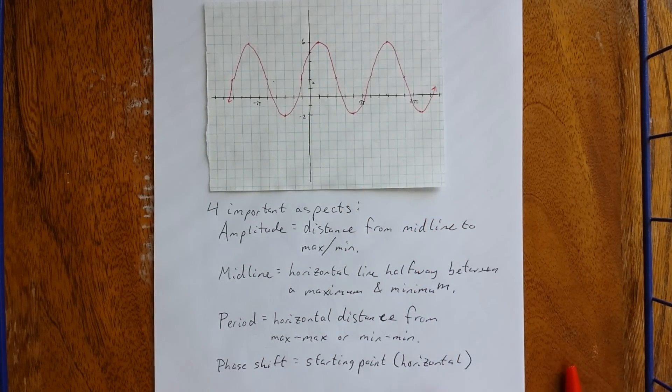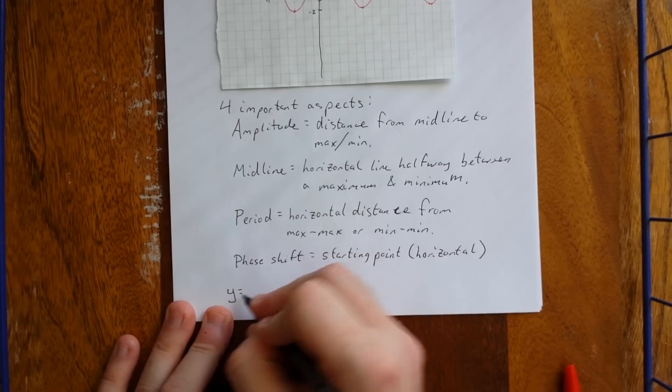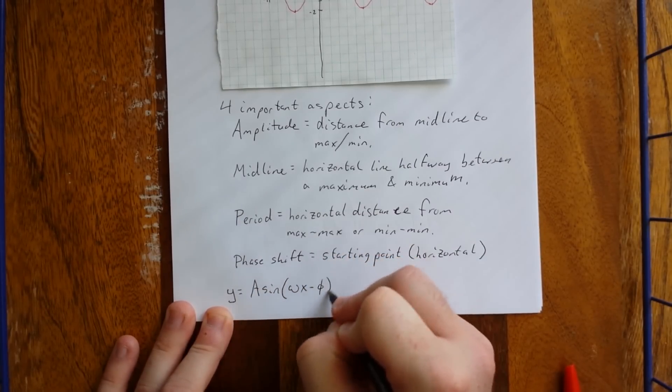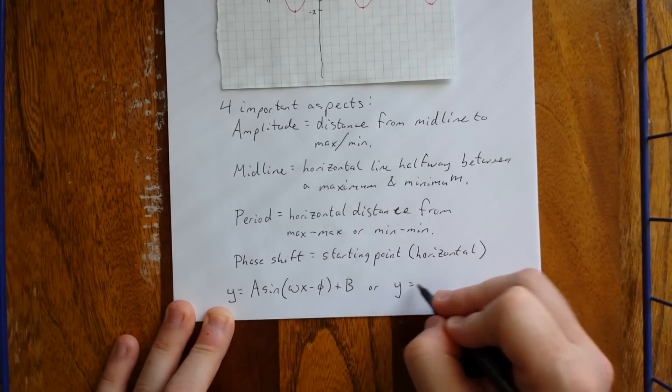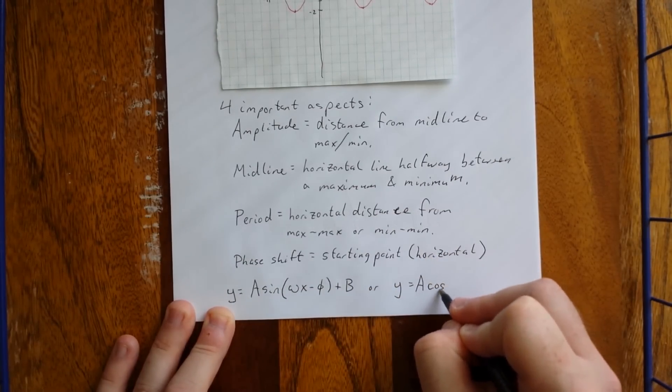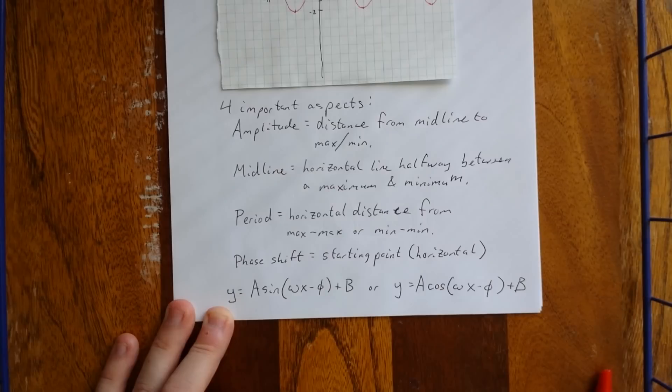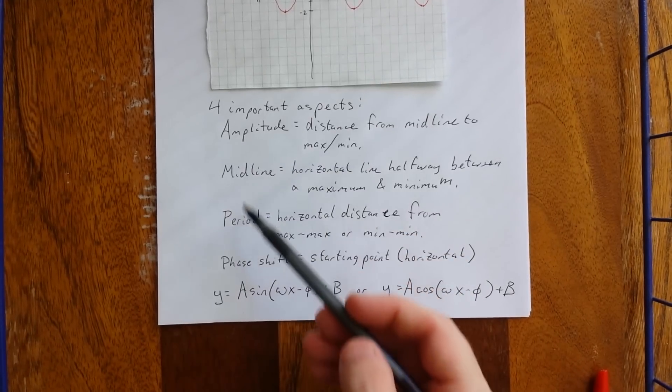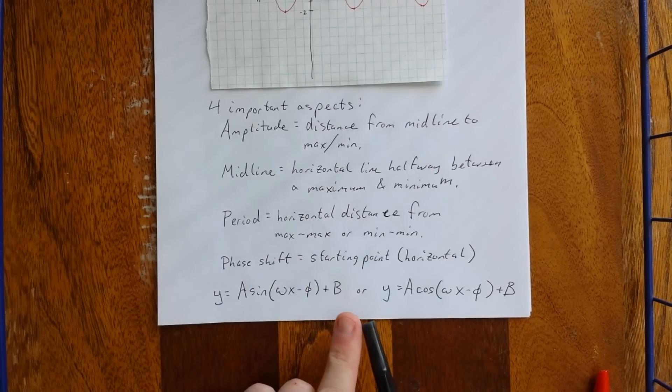Now, both of these can be determined by the following equation. So it will either look like y equals a times the sine of omega x minus phi plus b, or let's change that sine to a cosine, a times the cosine of omega x minus phi plus b. Now, there are four constants to calculate. Coincidentally, there are four things to calculate from the graph itself.